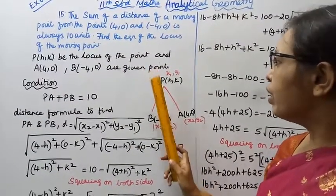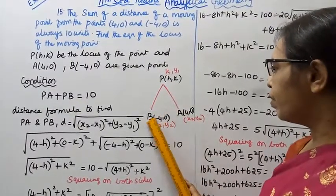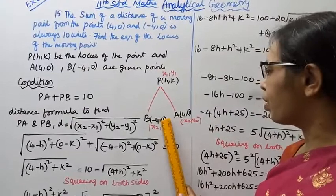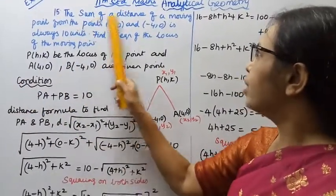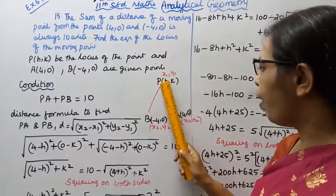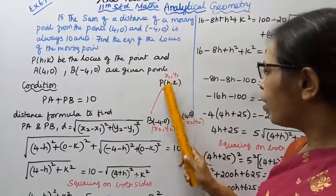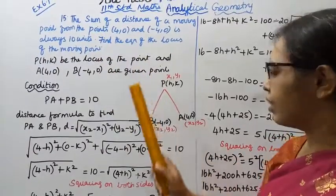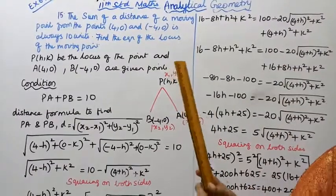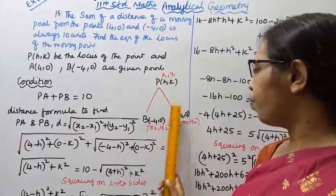The given points are A(4, 0) and B(-4, 0). Let P(h, k) be a point on the locus. The positive side and negative side are noted. The condition is: the sum of distances of the moving point from the given points. So PA plus PB equals 10.